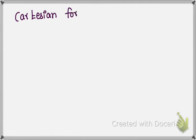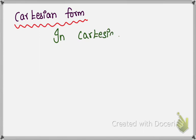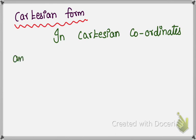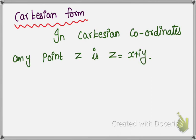In Cartesian coordinates, any point z is written as z = x + iy. To summarize, we have covered four forms: the necessary condition of the CR equations, the sufficient condition, the polar form, and the Cartesian form. Thank you.